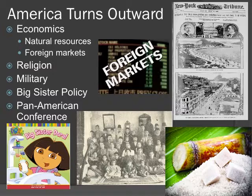This is slide one in our imperialism unit, entitled 'America Turns Outward.' This is really the beginnings of when America becomes a world power. Imperialism — one country taking over another country to run it as its own — is not new; it's been going on since basically the beginning of time. But this is when America gets into it. We were a colony of Great Britain, so we were on the other end of imperialism initially. Now we are on the colonizing end of it.